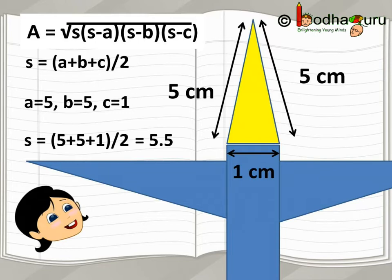Here, perimeter is equal to 5 plus 5 plus 1, that is the sum of the three sides of the triangle, and we know semi-perimeter is half of the perimeter.